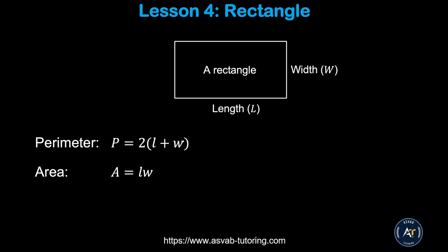First, we'll learn how to find area and perimeter of a rectangle. A rectangle is a four-sided shape and its opposite sides are the same. So this side and that side are the same, and this one and this one are the same. The perimeter is 2 times (L + W) and area equals length times width.